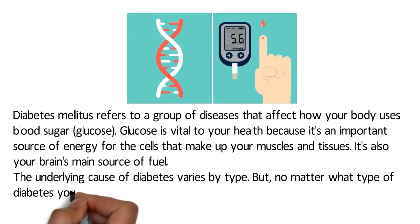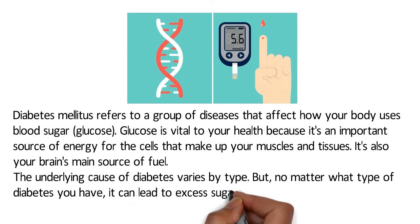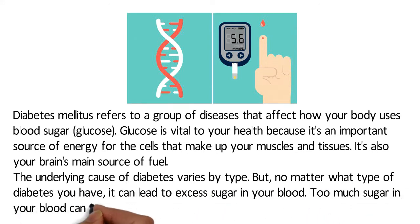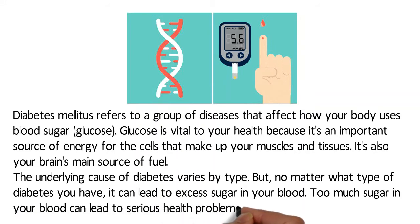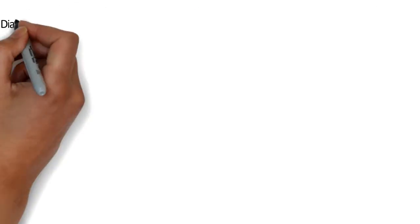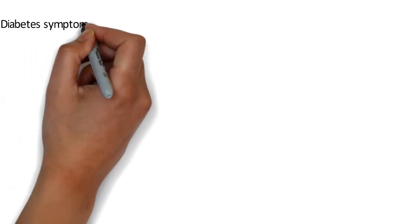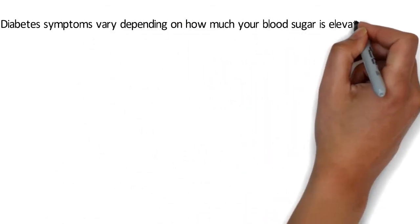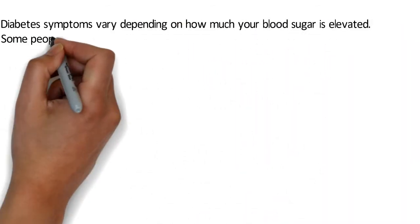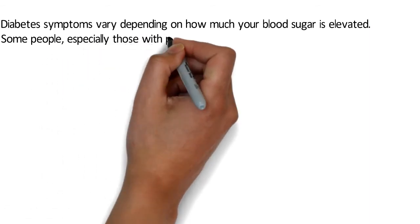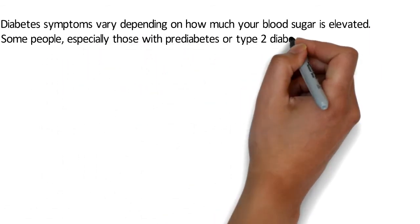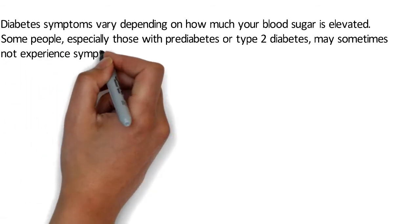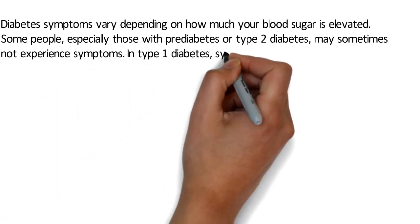The underlying cause of diabetes varies by type, but no matter what type of diabetes you have, it can lead to excess sugar in your blood. Too much sugar in your blood can lead to serious health problems. Diabetes symptoms vary depending on how much your blood sugar is elevated. Some people, especially those with prediabetes or type 2 diabetes, may sometimes not experience symptoms.